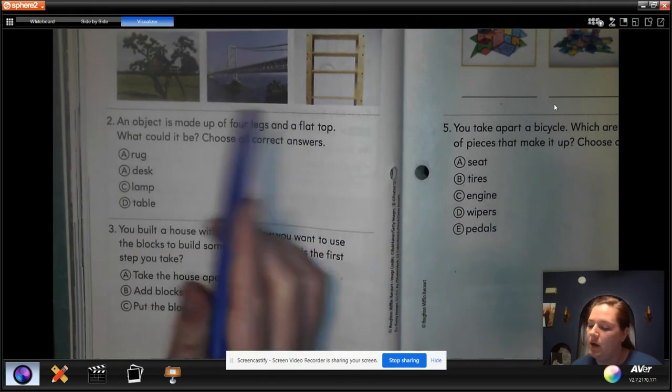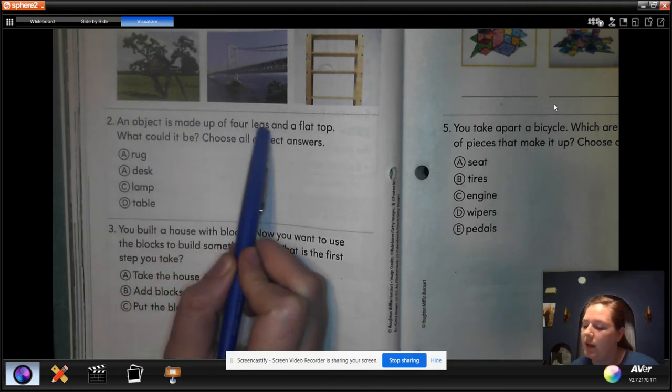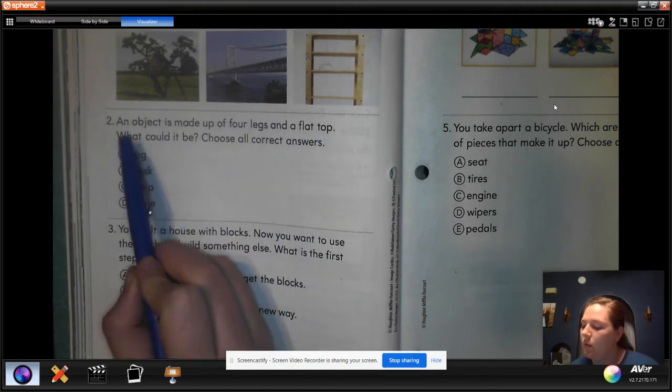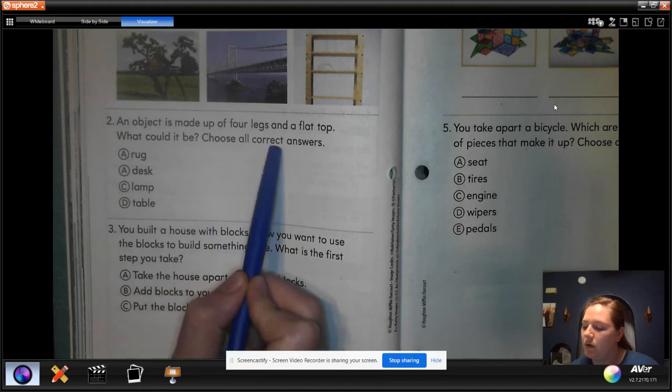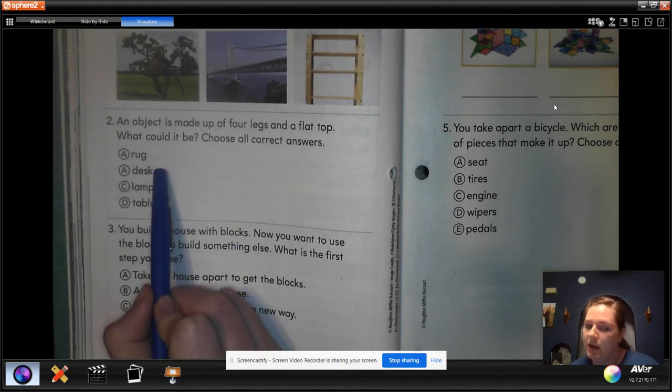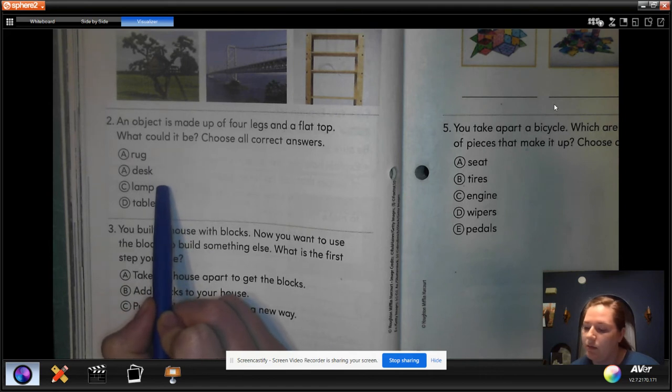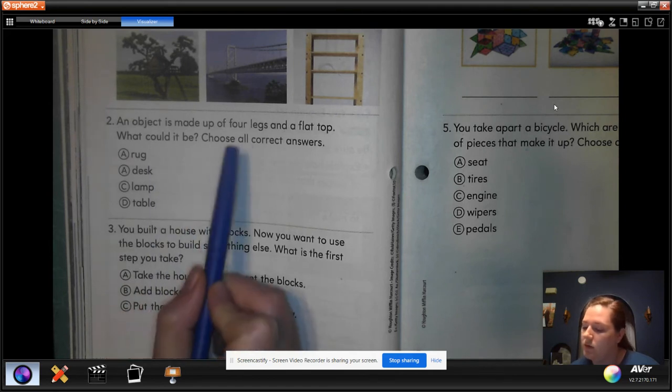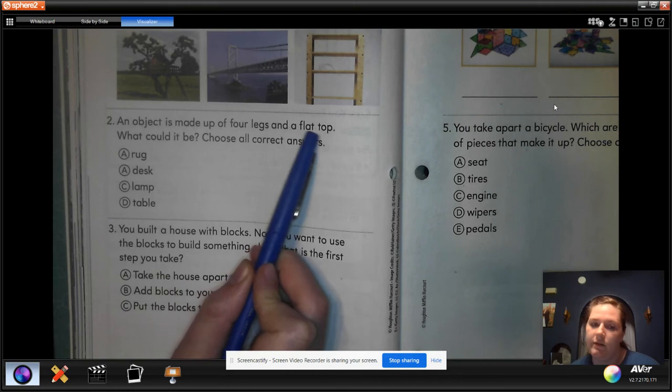Number two. An object is made up of four legs and a flat top. What could it be? Choose all correct answers. So it could be more than one. Could it be a rug? A desk? A lamp? Or a table? Choose all correct that has four legs and a flat top.